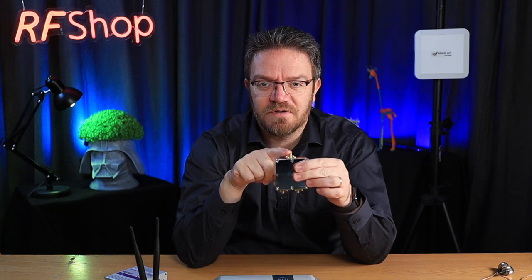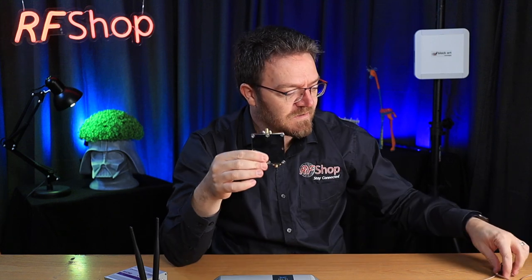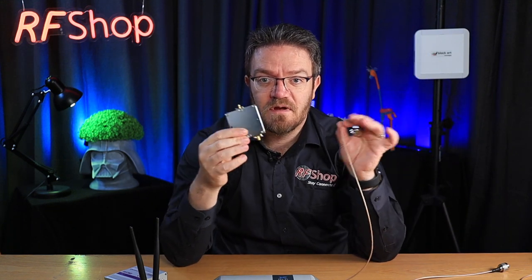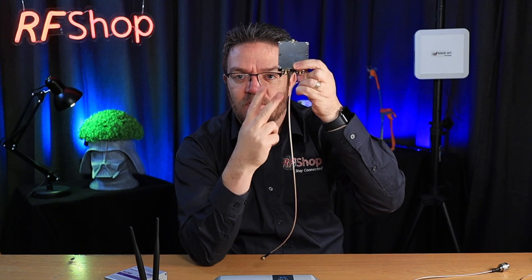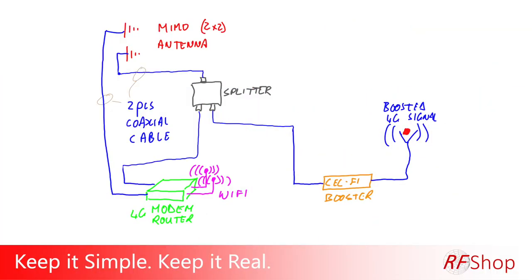So that cable goes one into here and then with another piece of cable, so just any cable like I have here. It could be a very short cable. It runs from the small connector to both devices. So now you have two outputs. One output goes to the CellFi, one output goes to the other port of the modem.